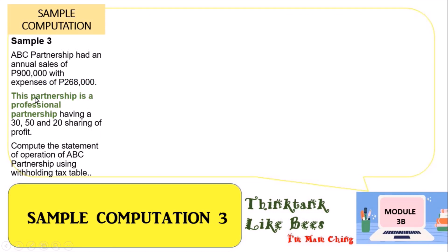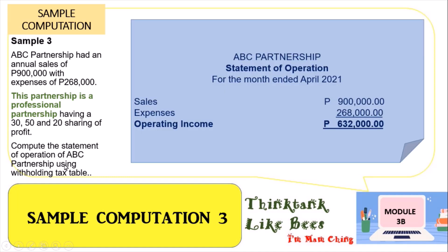Let's continue with sample number three. This time it is again a professional partnership, but we are using the withholding tax table. First, compute the statement of operations: sales minus expenses gives an operating income of 632,000. We then compute the tax for each partner using the withholding tax table.